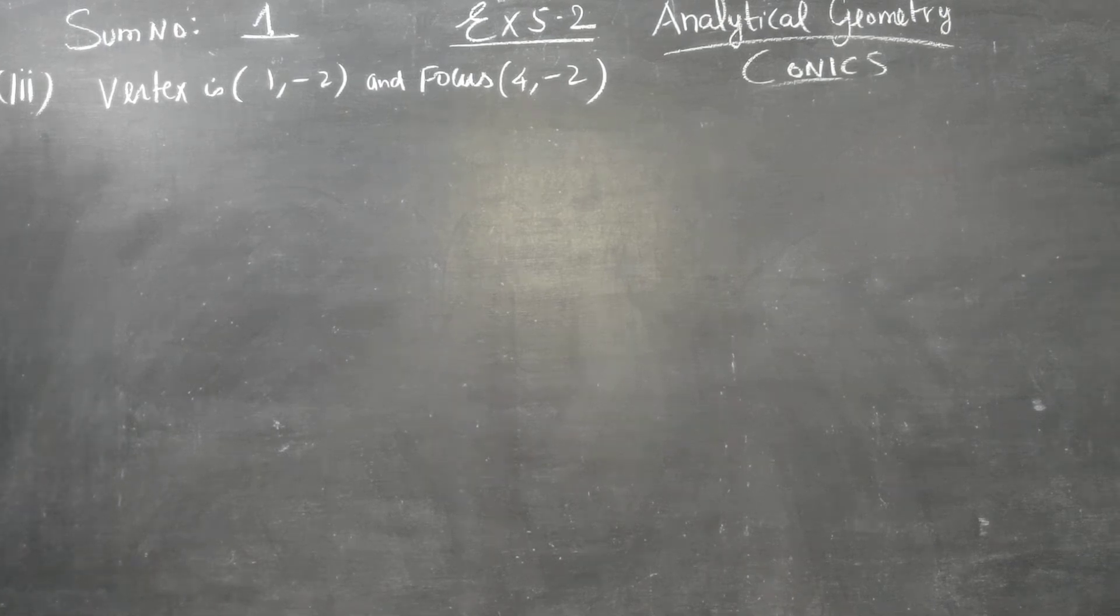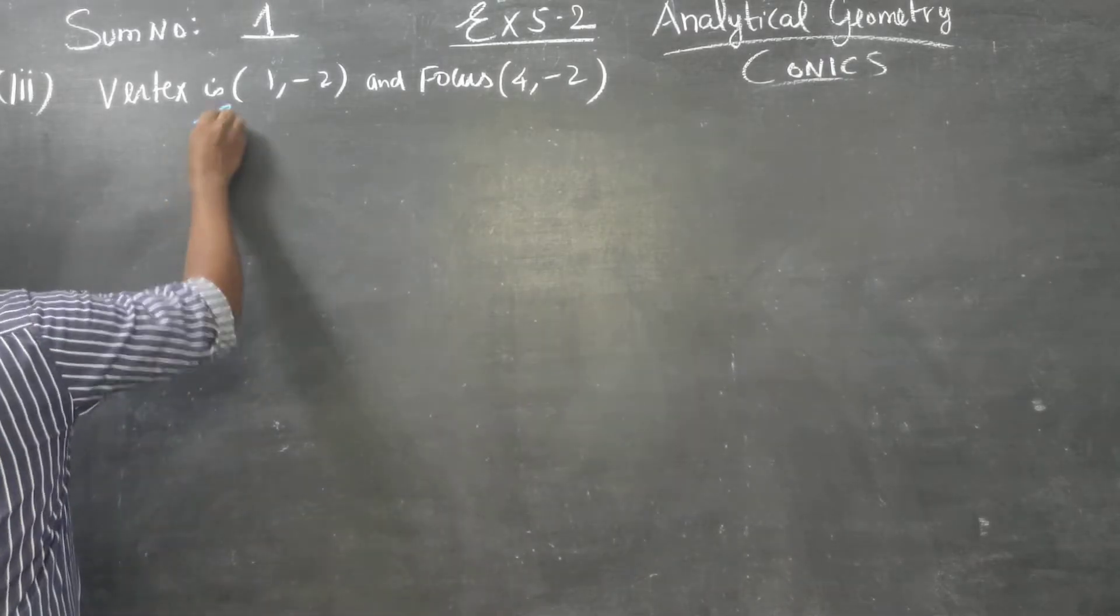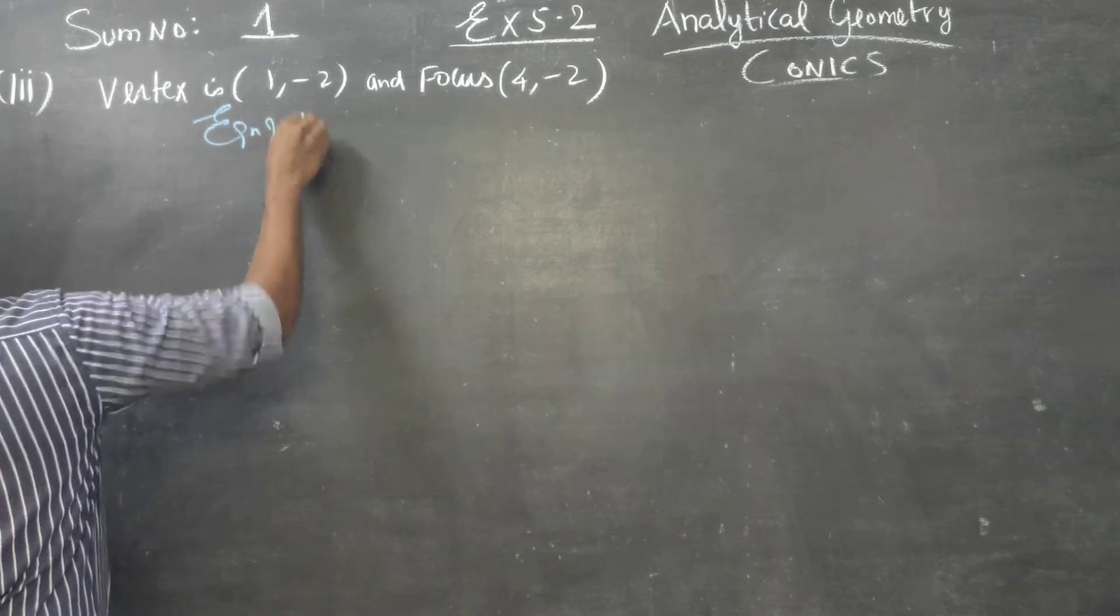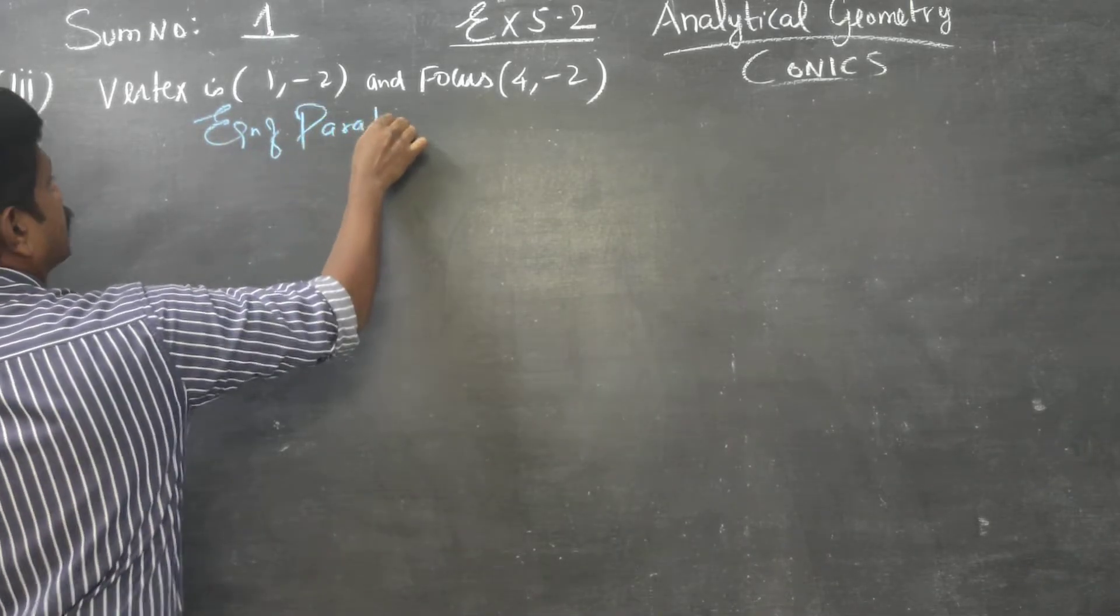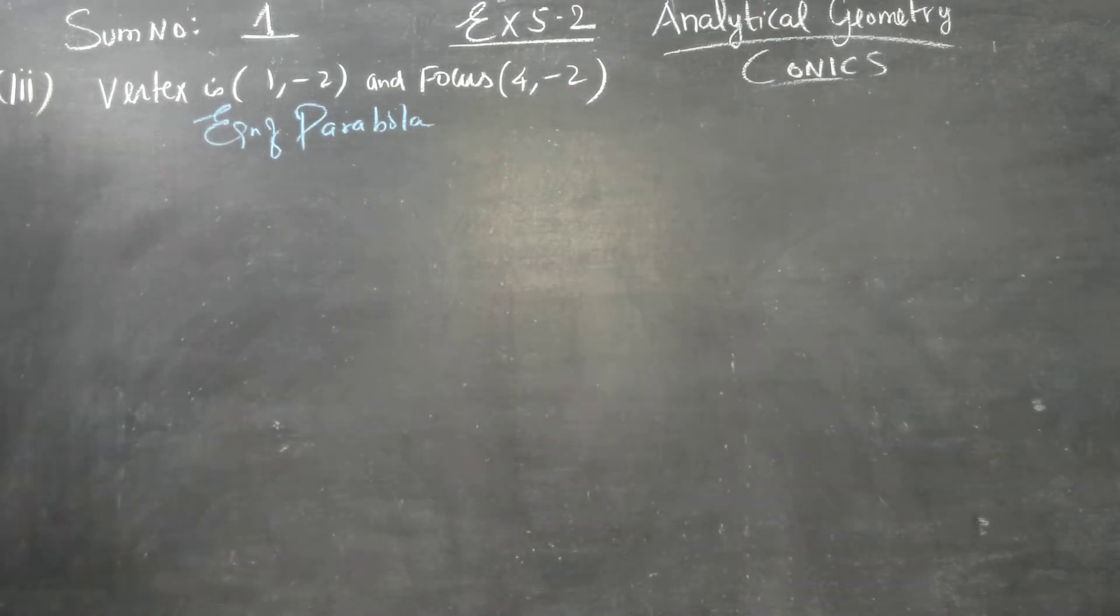Dear 12 standard students, in chapter number 5, analytical geometry sum number 1, we are going to find equation of parabola with vertex (1, -2) and focus (4, -2).